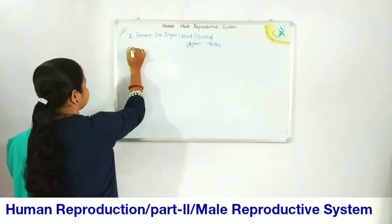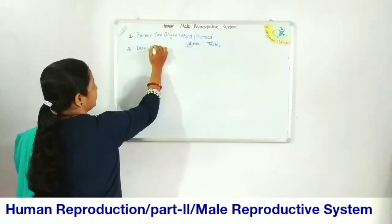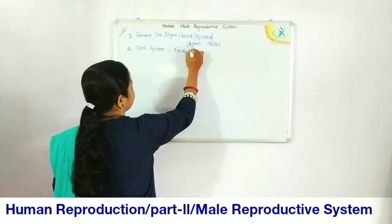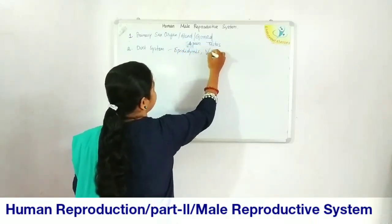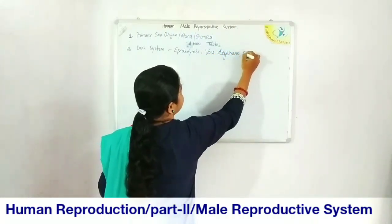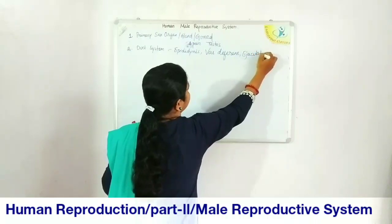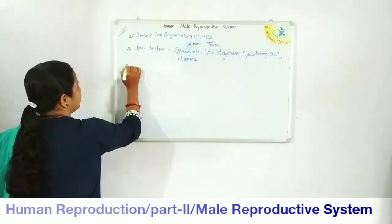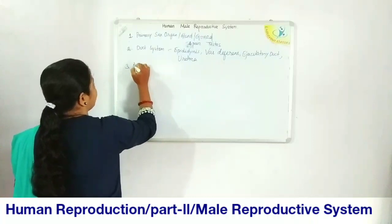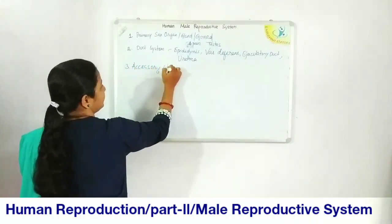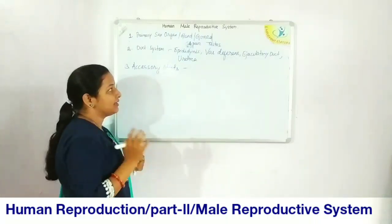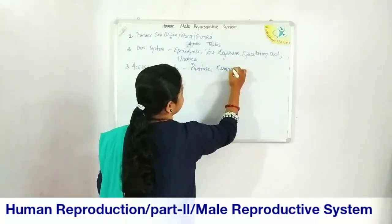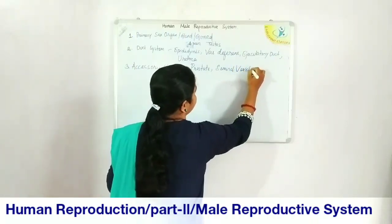The second heading is the duct system, under which we study the epididymis, the vas deferens, the ejaculatory duct, and the urethra. The third heading covers the accessory glands of the male reproductive system: the prostate, the seminal vesicle, and the Cowper's gland.